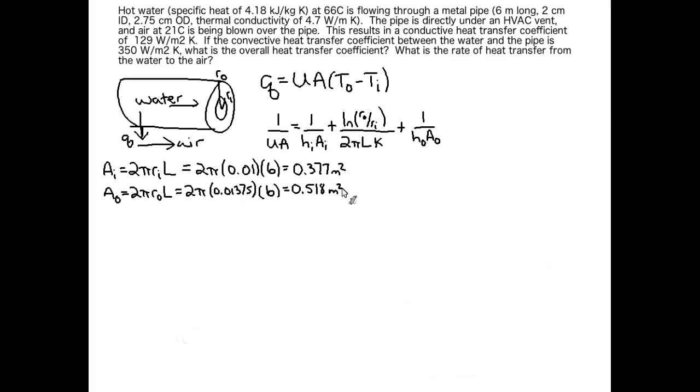Okay, so our inside surface area is 0.377 meters squared. Our outside surface area is 0.518 meters squared. Notice that I use the inside radius for the inside area, the outside radius for the outside area. It's the same length. The pipe is the same length all the way along. It's just the radii that change, and that's what gives you your inside versus outside area. So now that we have our inside and outside area, we can go ahead and plug in all our information to get 1 over UA.